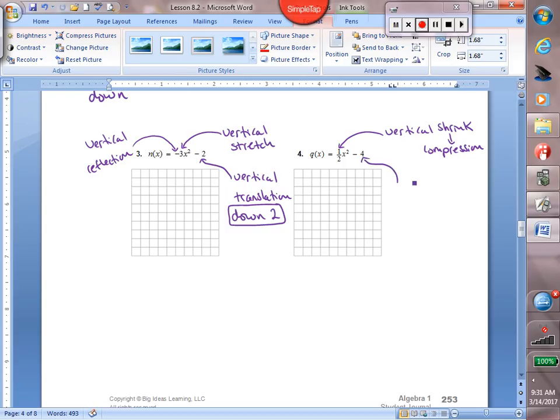Then we have, we're subtracting four. So we do have a vertical translation. We need to be specific that we move down four. Again, if you want to simplify it, I'm fine if you just tell me that it moved down four. No big deal.